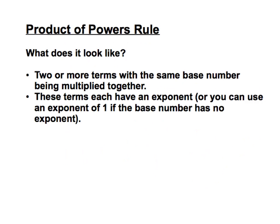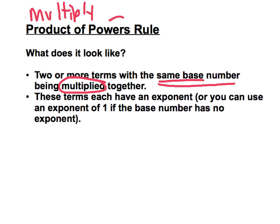On the other hand, the product of powers rule is going to look like two or more terms that have the same base number and they're being multiplied together. If we think about the name — 'product' means multiply, and 'powers' means we're going to have some exponents. These terms are going to have an exponent.